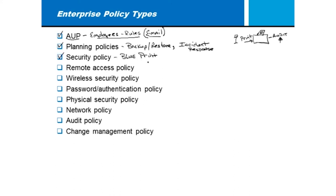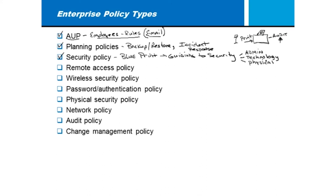The security policy itself is the top-level blueprint that hopefully leads to guidelines and procedures — guiding the company to better security. It breaks down into admin stuff like the acceptable use policy, technology guidance such as how passwords should look (length and complexity, not just what firewall to put in and what rules to have), and physical security: guards, fences, gates, locks, and magnetic key cards.